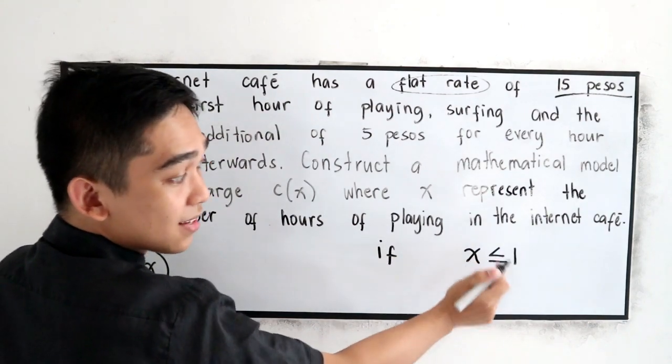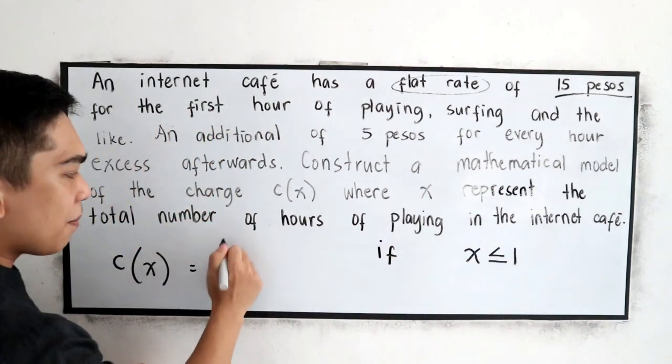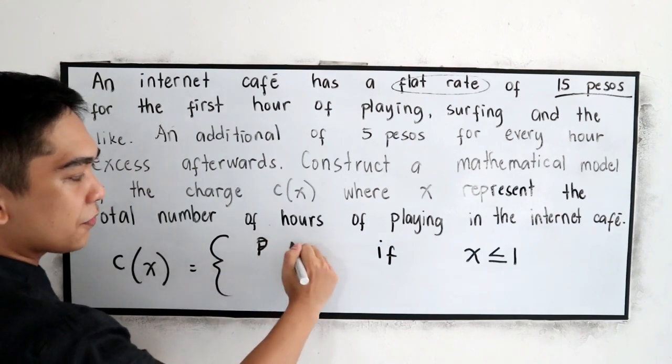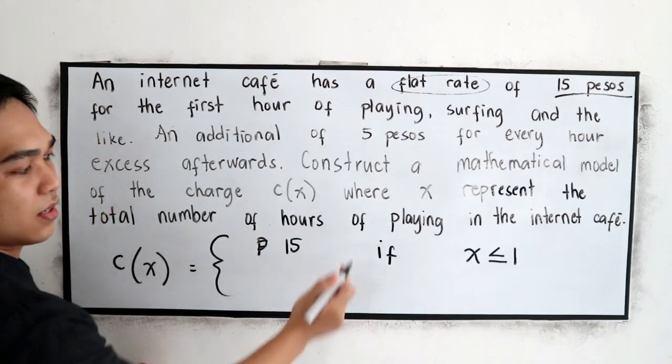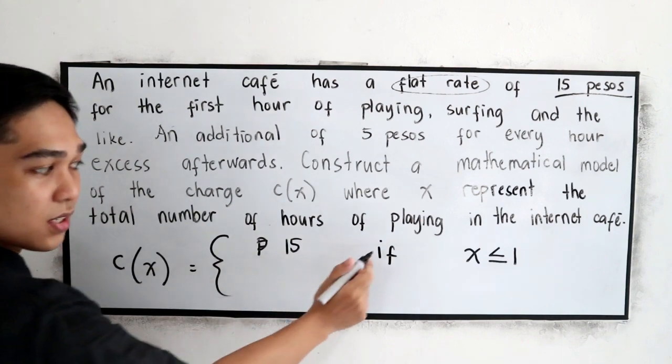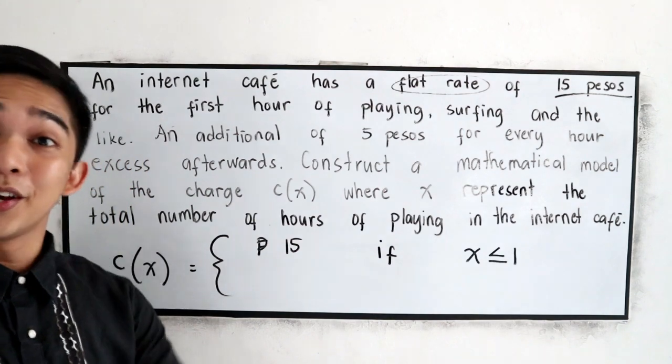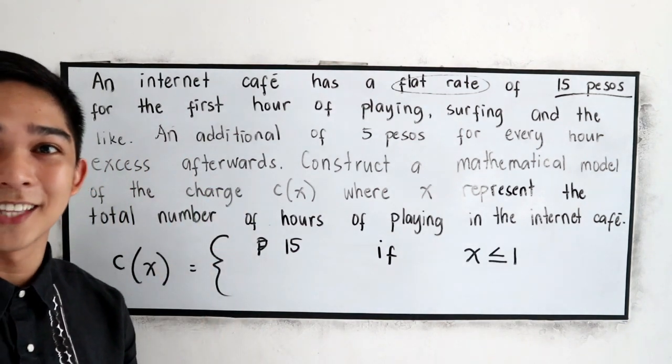If x is less than or equal to one, ang babayaran niya ay 15 pesos. That's the first condition.